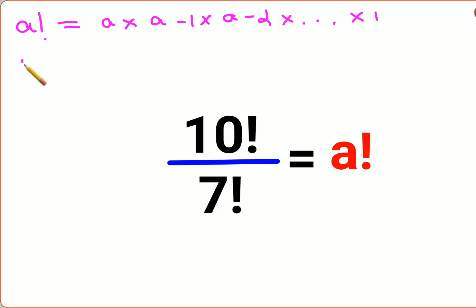So now we have 10 factorial. 10 factorial can be written as 10 × 9 × 8 × 7 × 6 × 5 × 4 × 3 × 2 × 1.